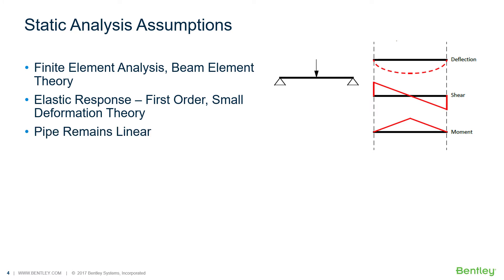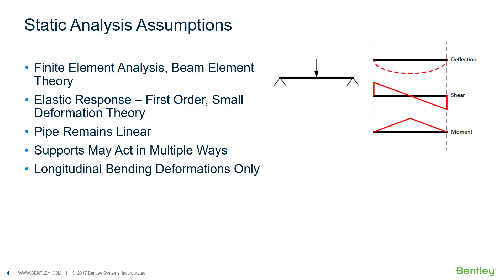The pipe remains linear — there is no yielding of the pipe considered. The supports may act in one way or both ways. The analysis considers longitudinal bending deformations only, ignoring local stresses like bending of the pipe wall and stress concentrations at tees and bends. In pipe stress analysis, we use SIFs to capture this behavior.